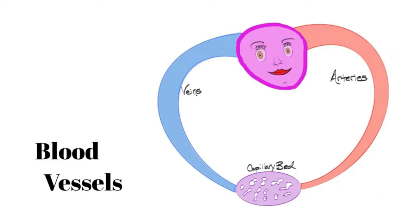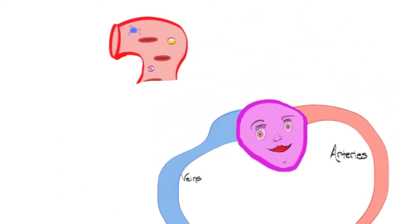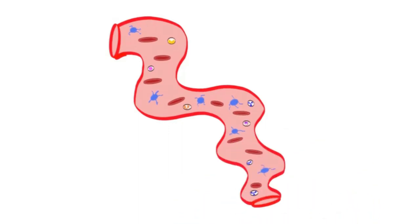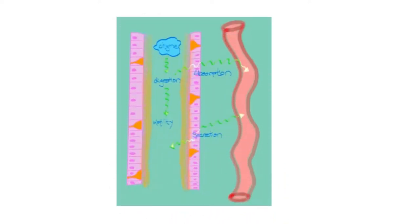We're going to focus on blood vessels — what they're composed of, the different types, and some very interesting adaptations. Blood vessels contain blood, the medium, which includes water, blood plasma, and blood cells — otherwise known as formed elements: red blood cells, white blood cells, platelets — as well as nutrients such as glucose, ions, and hormones. The role of blood is to circulate and transport these entities throughout the body.